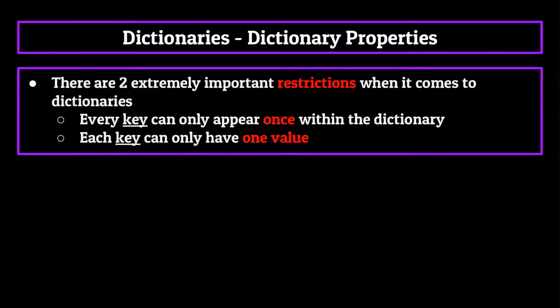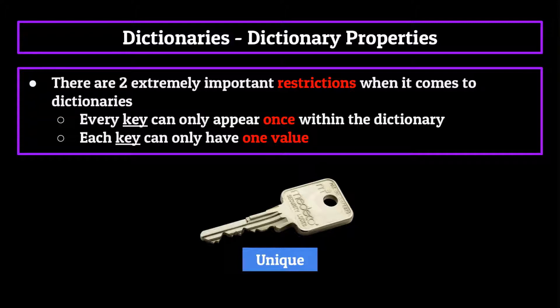Let's start with the first one. Each key has to be unique and cannot be replicated, duplicated, cloned, copied, or anything else that would cause there to be two keys of the same value within a dictionary.